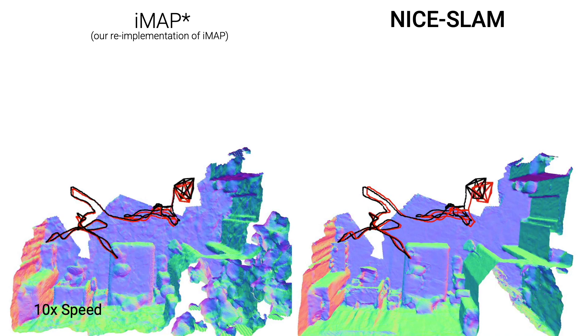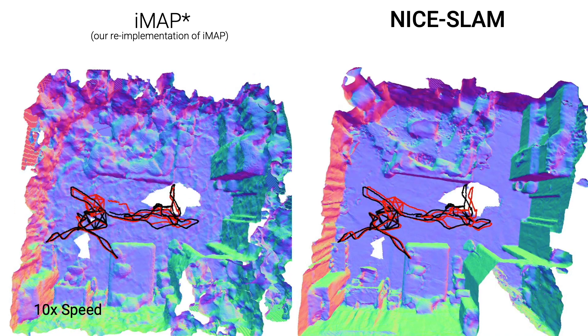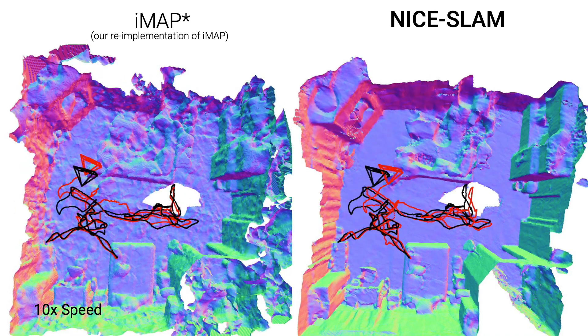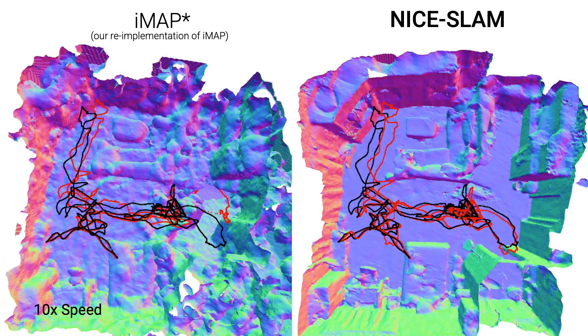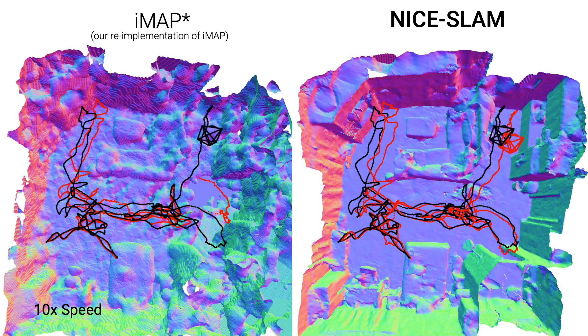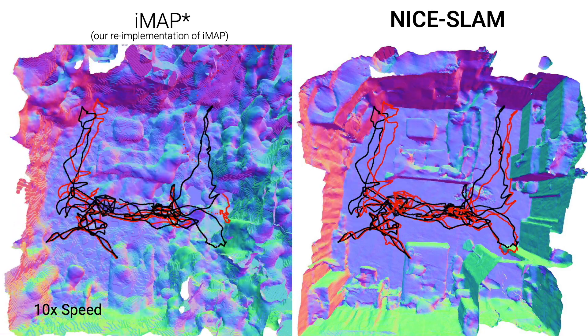Next, we compare on the ScanNet dataset where the RGBD sequences are noisy. Unlike IMAP performing the global update due to the use of a single MLP, our system can update locally thanks to the grid-based hierarchical representation, so we don't suffer from the forgetting problem.